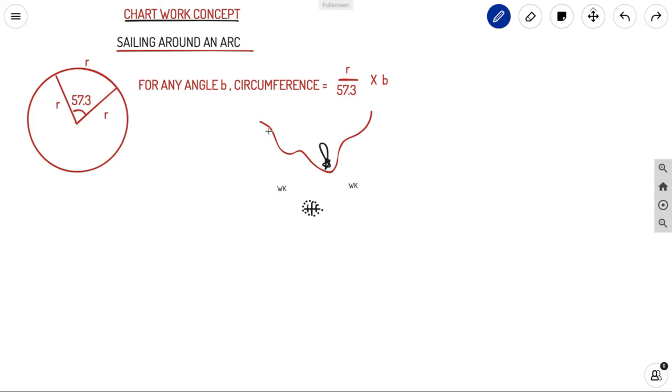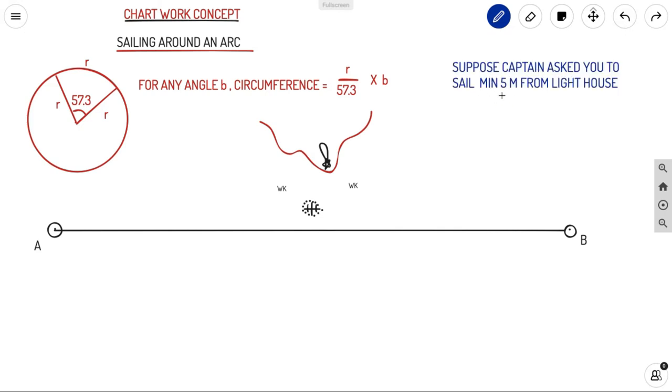Let us see an example. Suppose we have a landmass like this and you have a lighthouse here. Also you have some obstructions near the land, that is some wrecks and dangers for surface navigation. So you need to sail from position A to position B. It's pretty straightforward A to B, a straight rhumb line course. Now comes your twist: your captain asked you to sail minimum five miles from the lighthouse.